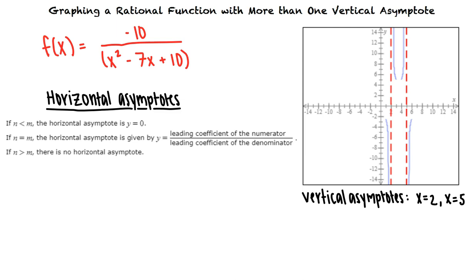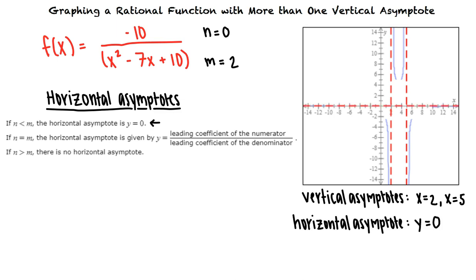For our function, the degree of the numerator is 0 and the degree of the denominator is 2. Since the degree of the numerator is less than the degree of the denominator, the horizontal asymptote is the line y equals 0, which is the x-axis. This means that as x increases or decreases without bound, f of x approaches 0.